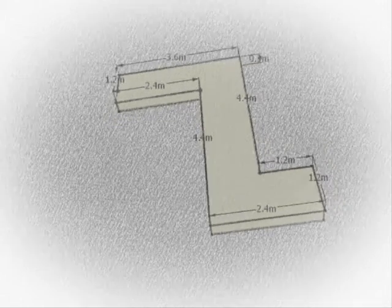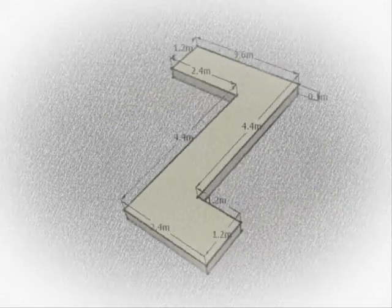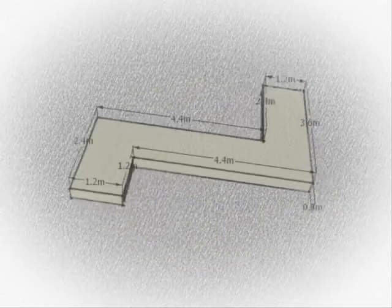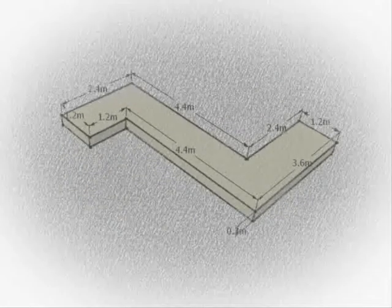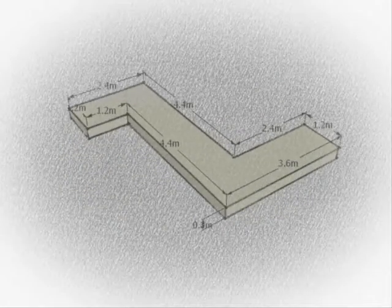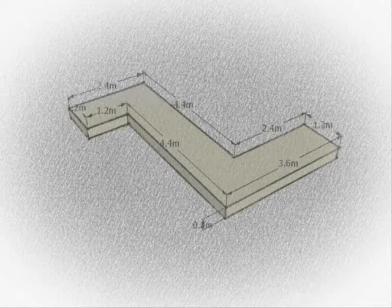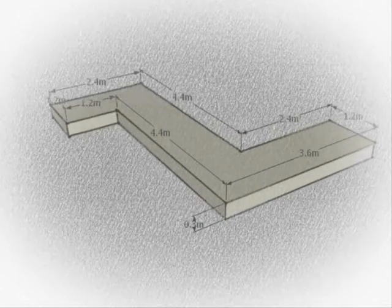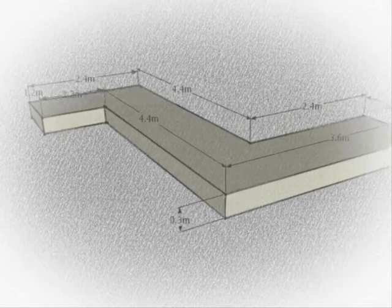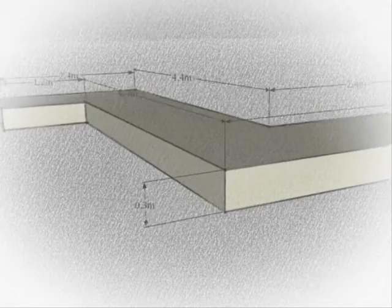So to get a little bit more complex we are going to be looking at something like this here, working out the volume of this path. As you are going to see the path has a width of 1.2 metres all the way around but it goes off in different directions. It also has a depth for the concrete of 0.3 metres. So how would you go about working this out?